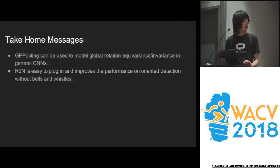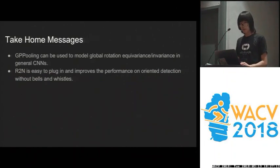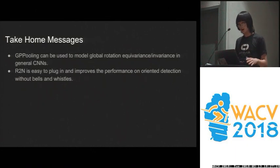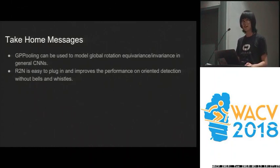Some take-home messages: GP pooling — if you want to model some rotation equivariance, just try GP pooling, it's the counterpart of general pooling layers. If you have a task of detecting oriented objects, you can also try R2N. And if you think our work is interesting, just stop by our poster. Thanks.